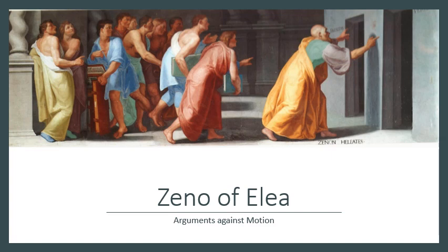Alright folks, let's talk about Zeno of Elia's arguments against motion. So to begin, Zeno gives several arguments against motion, but we're going to focus on what is called the dichotomy argument.